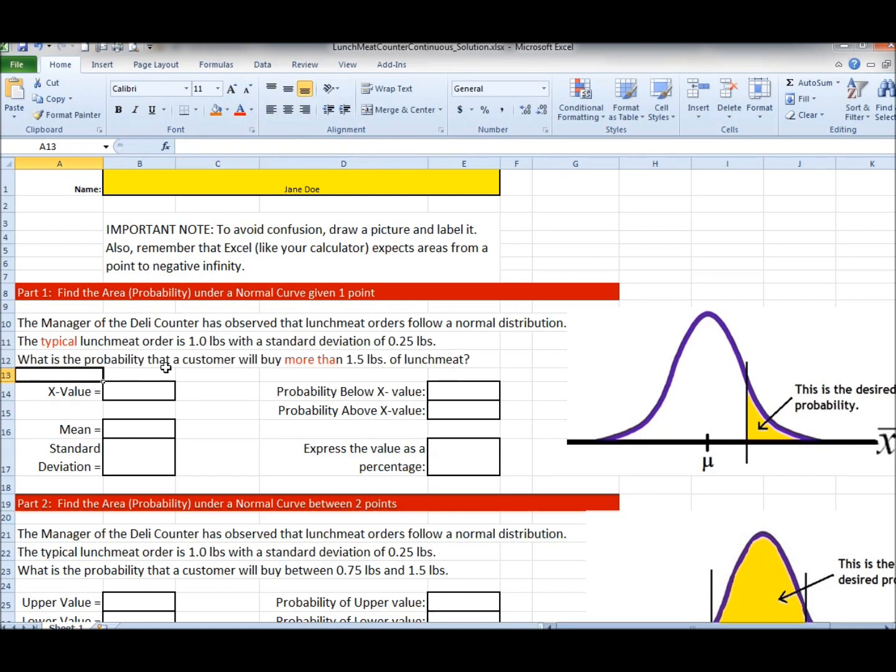Now from the problem I understand I want a probability and probability is the same thing as saying what is the area under the curve. Now what area is it? It's from that point 1.5 on my x-axis. More than, so in other words more than 1.5, this yellow area.